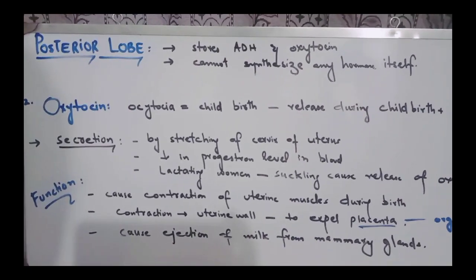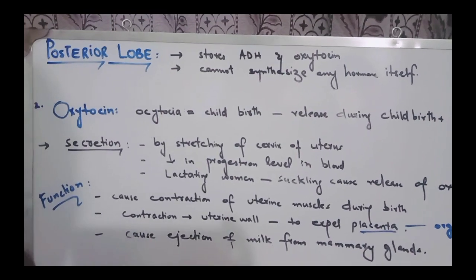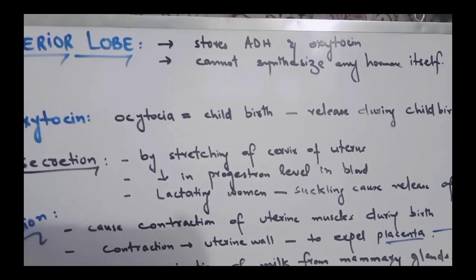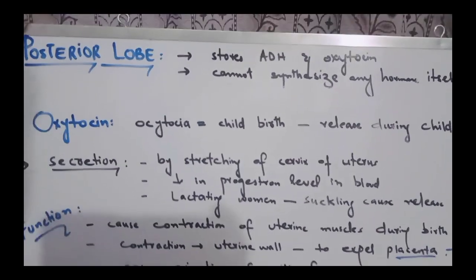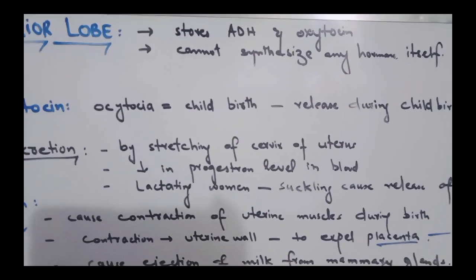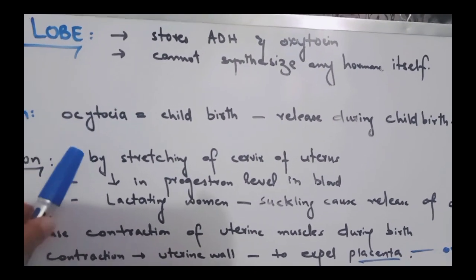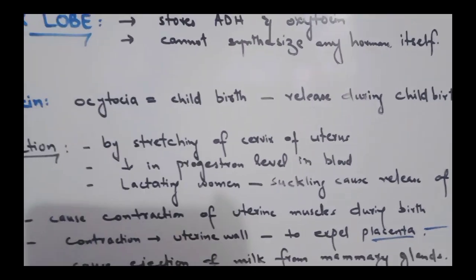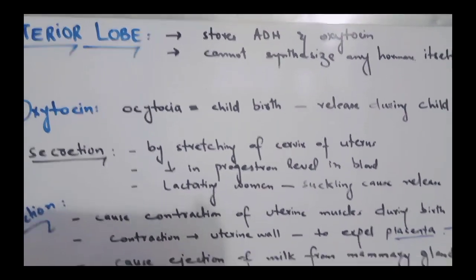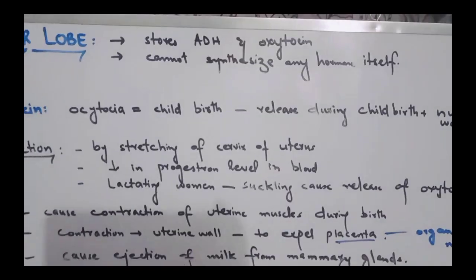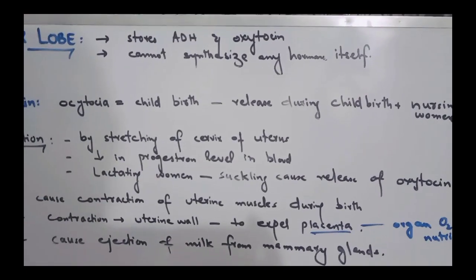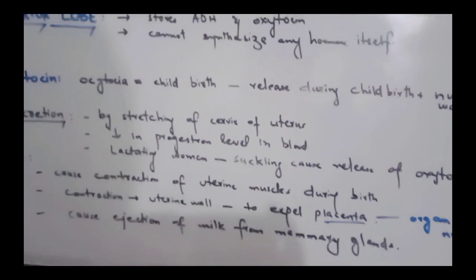The second hormone is Oxytocin, which is released from the posterior lobe. Oxytocin is a hormone which is released during childbirth and during the nursing of the child.